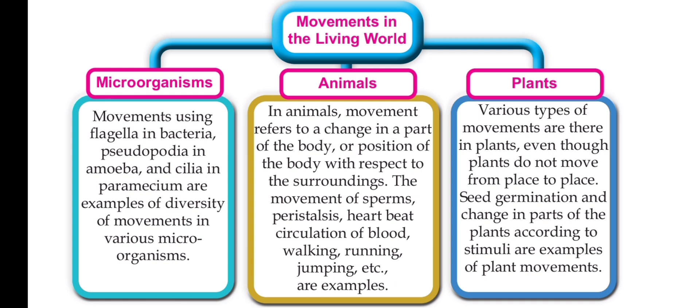When we eat, we digest our food — that is a kind of movement. The peristalsis process moves food through our digestive tract. During reproduction, sperms are involved — male and female. That is a heartbeat — that is one kind of movement.